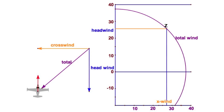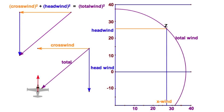You could also look at this a couple other ways. You know, you could do this with geometry, and crosswind squared plus the headwind squared equals the total wind squared, Pythagorean theorem.